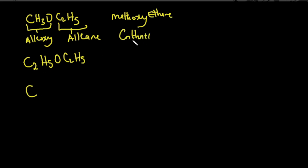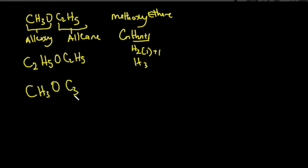Removing one carbon from one side leaves one carbon. Using the alkyl general formula CₙH₂ₙ₊₁, with n=1: H₂(1)+1 = H₃. So that side becomes CH₃. Adding that carbon to the other side gives C₃; with n=3: H₂(3)+1 = H₇. So the other side becomes C₃H₇.